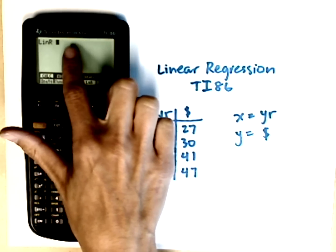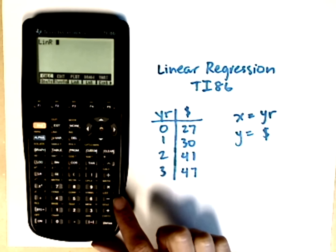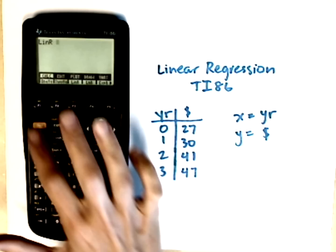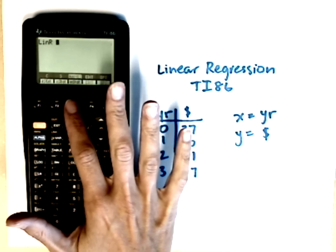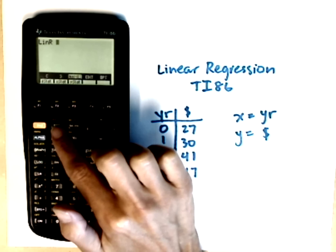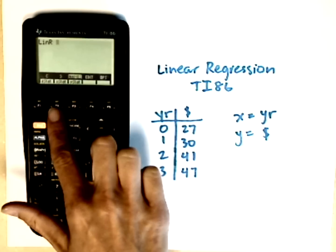I want x stat, y stat. So I need to go to my list names. I go back to the list menu to grab those. Second, list, names. I'm looking for the x stat name, and mine happens to be on the second one, F2.